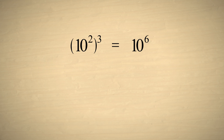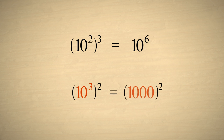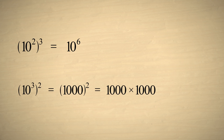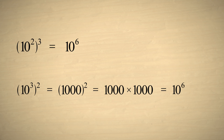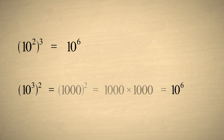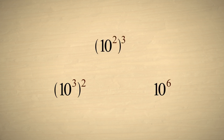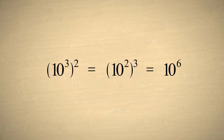Likewise, if we take ten cubed and square it, this is the same as one thousand squared, and one thousand times one thousand is one million, or ten to the sixth power. So squaring ten cubed and cubing ten squared both give the same result: ten to the sixth power. This makes sense because when we multiply the exponents three and two, or two and three, either way we get six.